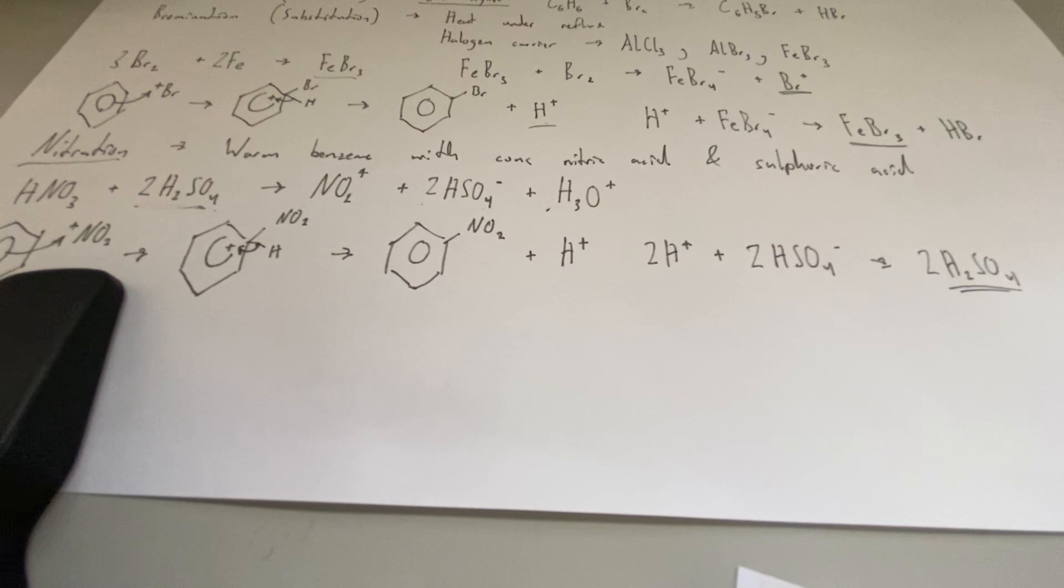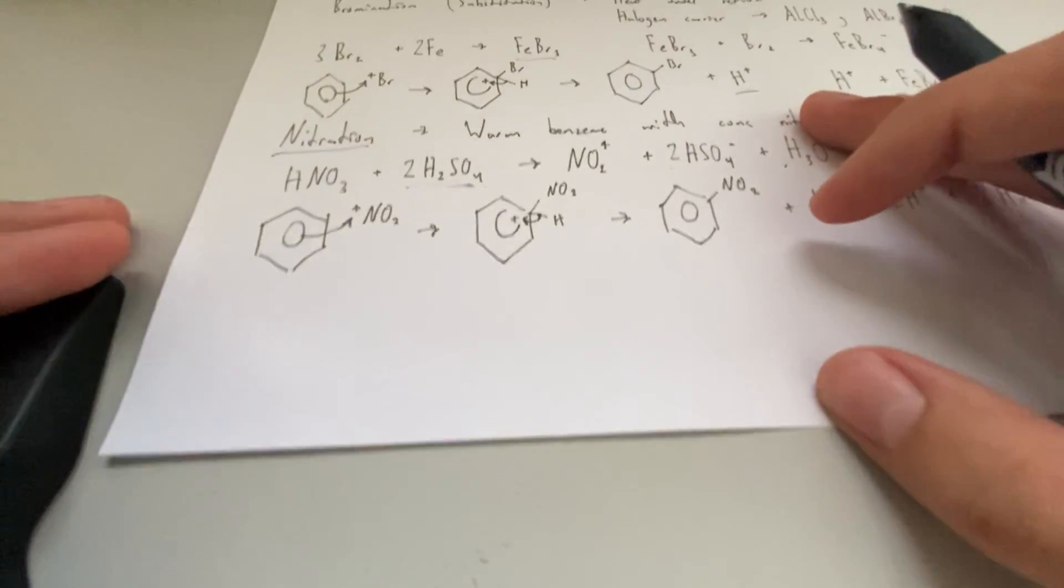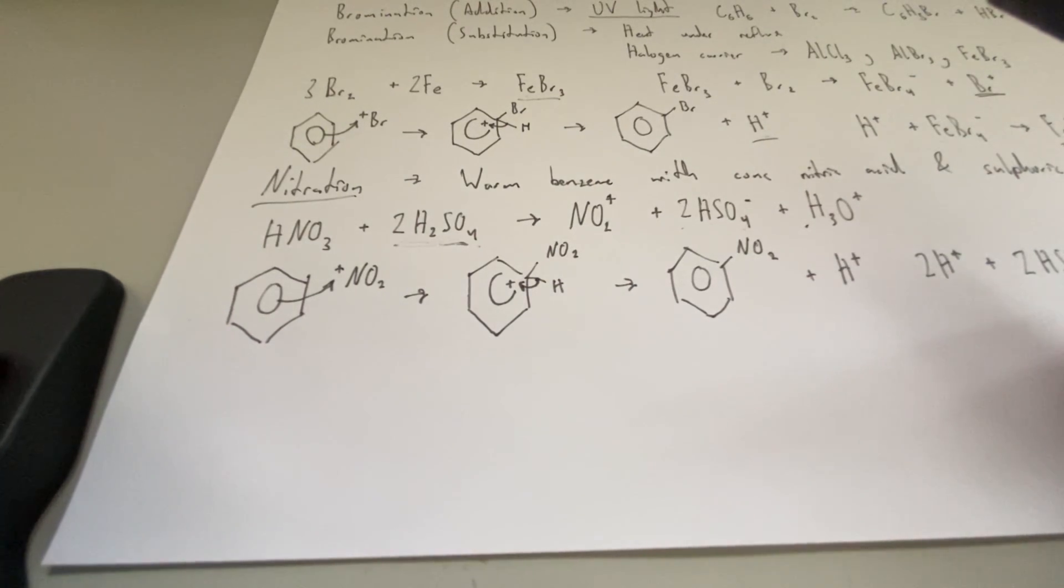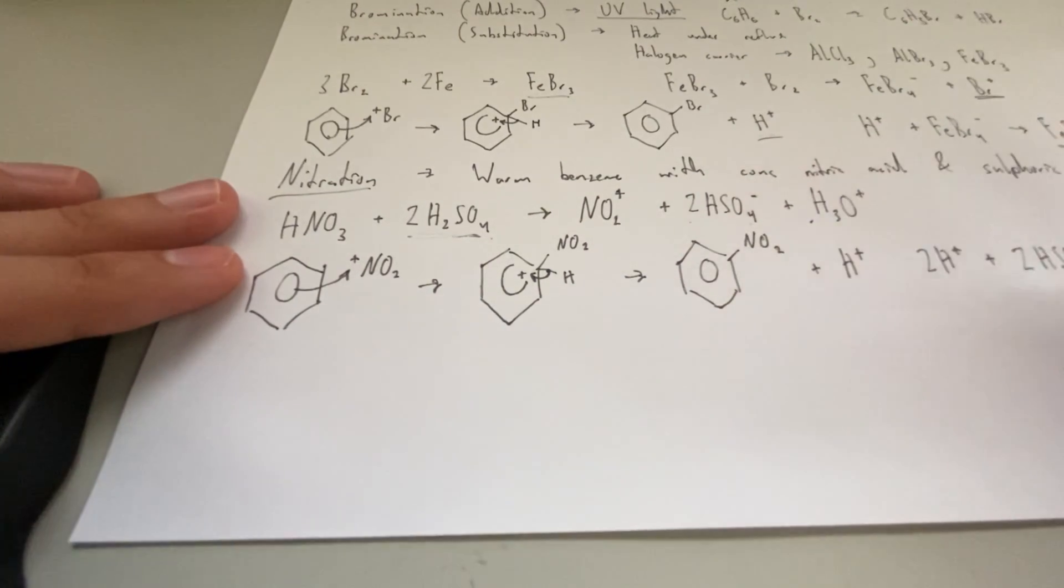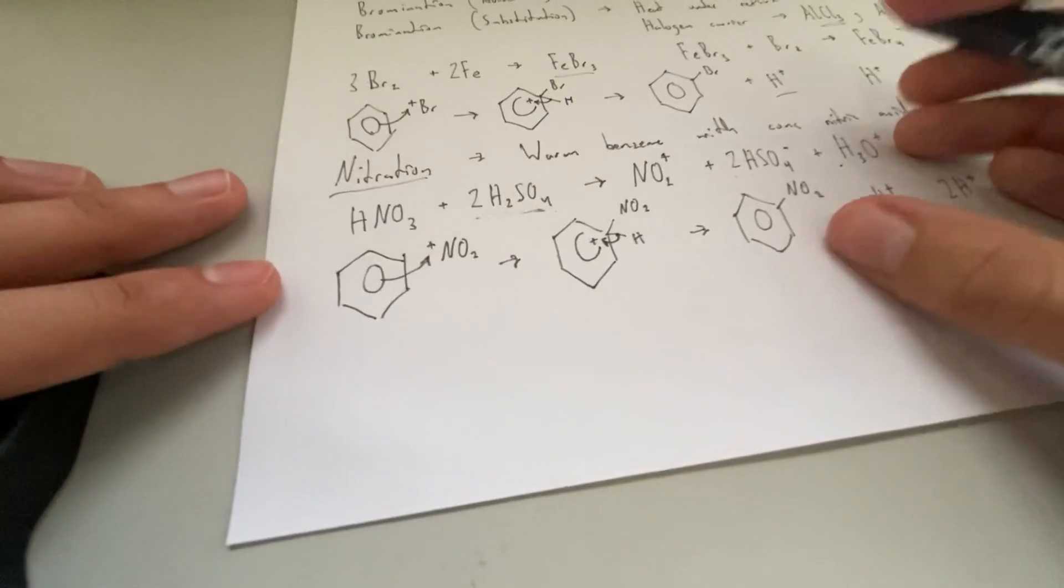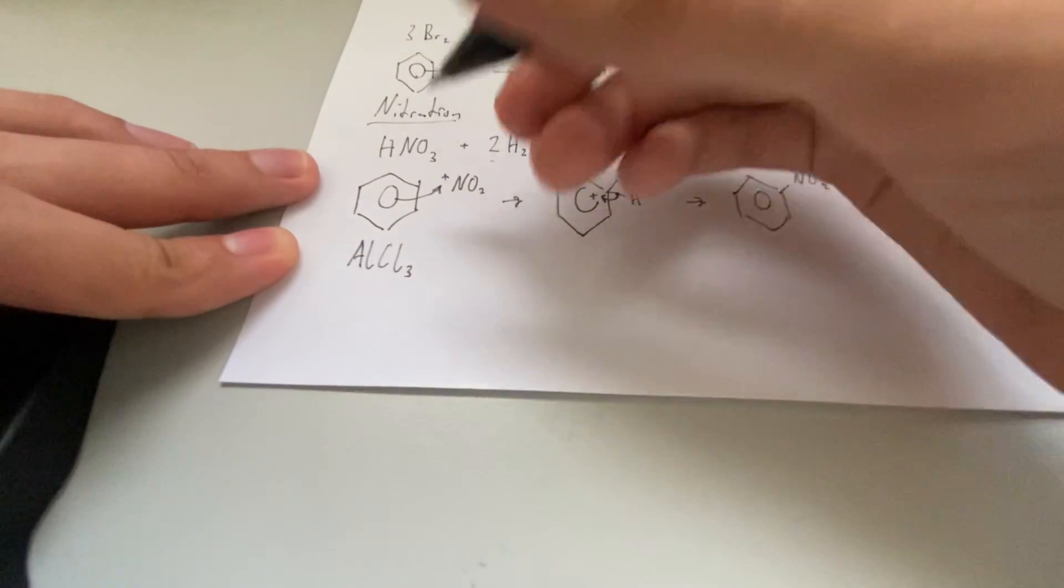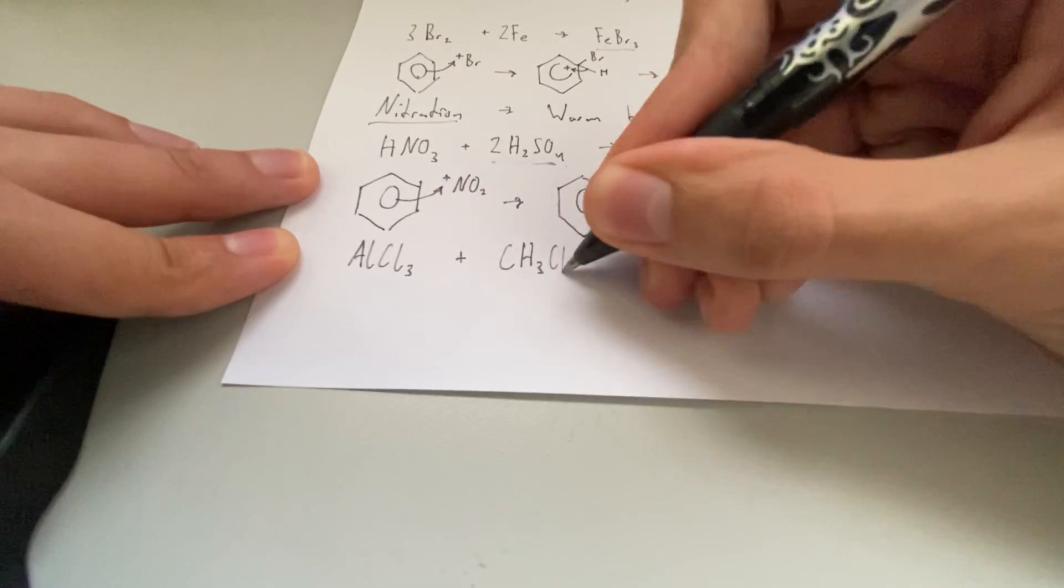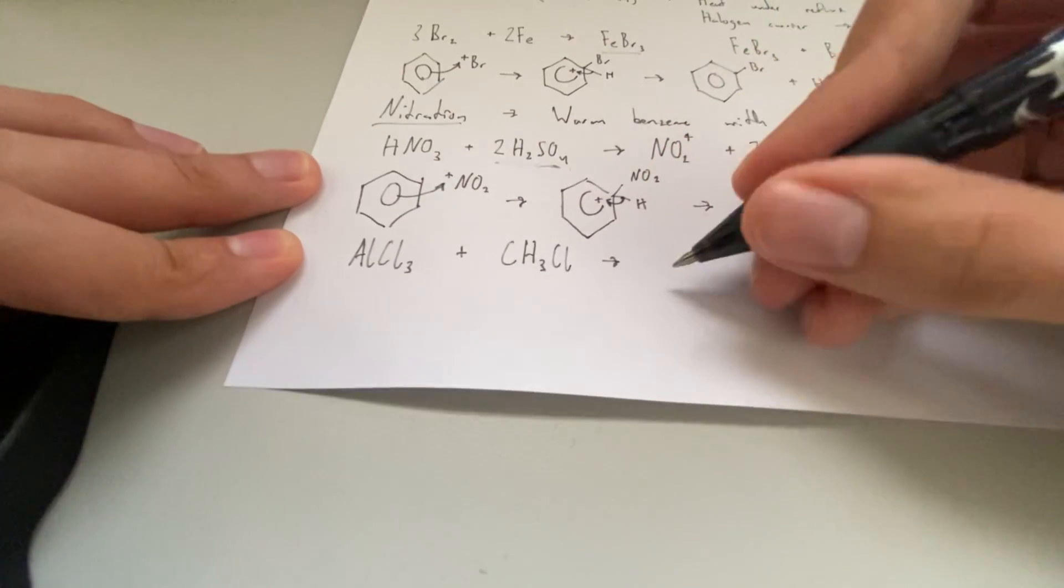Now we're going to move on to alkylation, which is probably one of the more popular reactions. I'm going to use halogenoalkanes for that. For this one, let's use one of the other halogen carriers that we discussed: AlCl3.